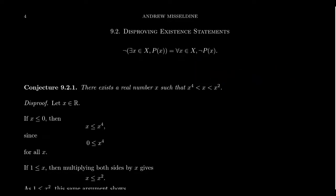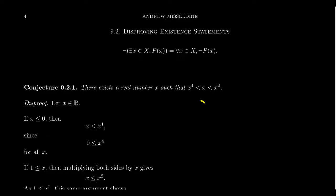Here's a conjecture: there exists a real number x such that x to the fourth is less than x, which is less than x squared. When you look at this statement, it's not so unreasonable. For example, there are many real numbers who are smaller than their square — like two squared is four, which is bigger, three squared is nine, which is bigger. There are also many real numbers which are larger than their fourth power, like one half is larger than its fourth power of one sixteenth. And modifications of this statement are, in fact, very easy to verify as true.